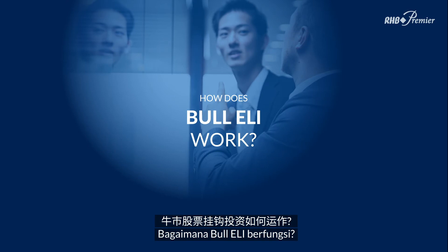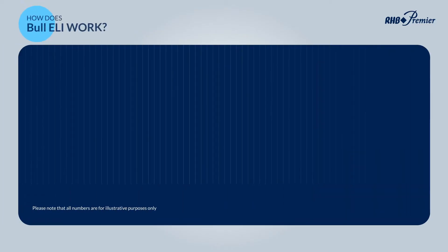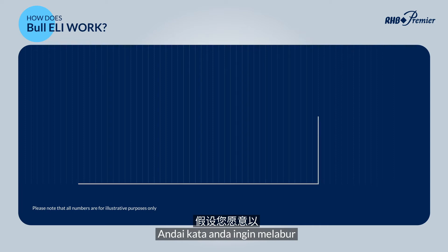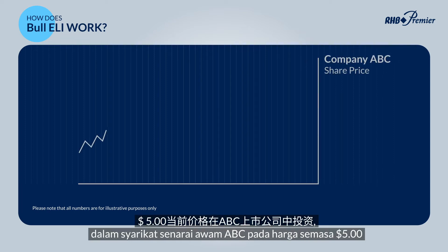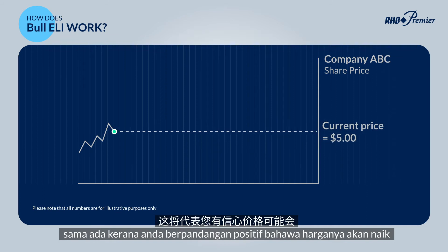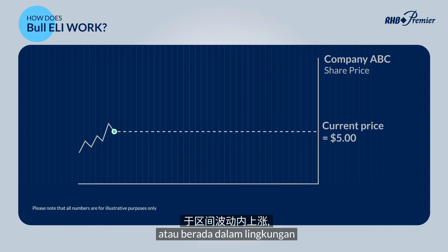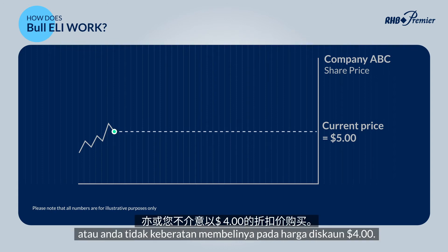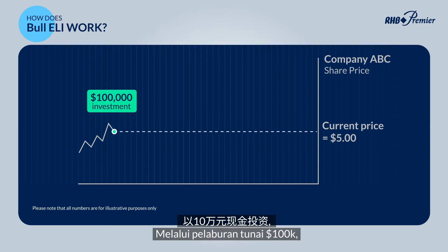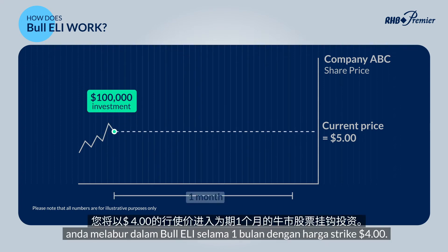How does BULL ELI work? Let's say you would like to have exposure in an ABC-listed company at the current price of $5, either because you have a positive outlook that the price may increase, be range-bound, or you do not mind purchasing at a discounted price of $4. With a $100,000 cash investment, you enter into a 1-month BULL ELI at a strike price of $4.